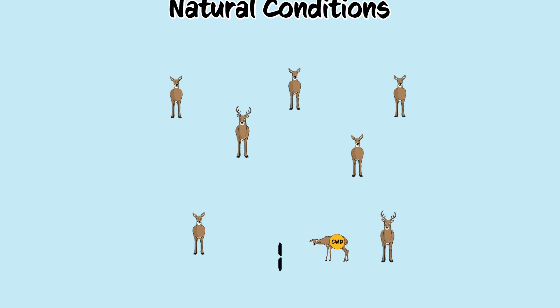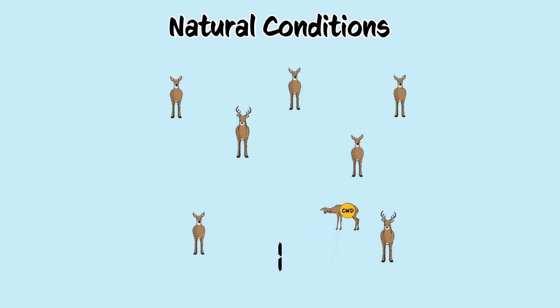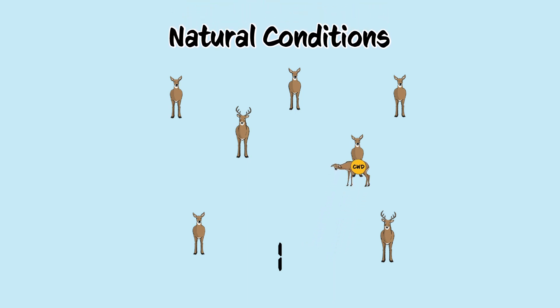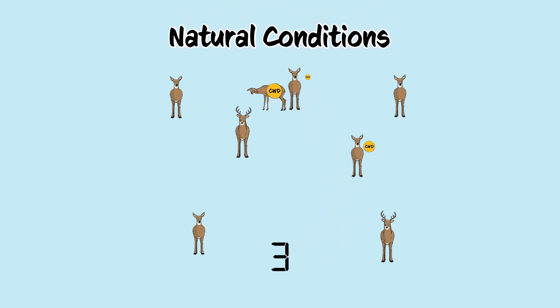In a natural system, infected deer may spread disease as they interact with other deer, like within family or social groups, or with the environment.